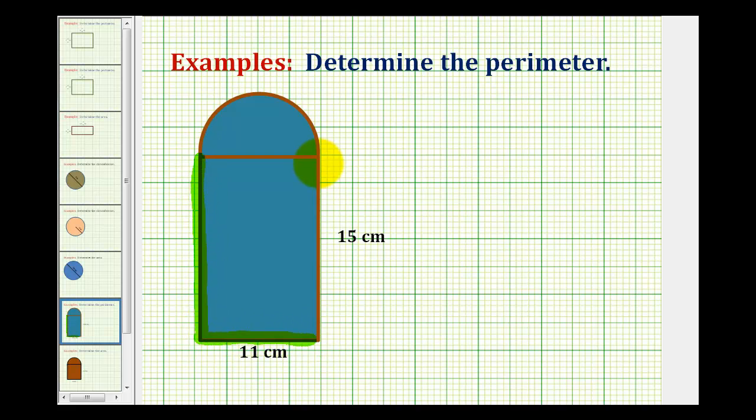Here, here, and here, and then we'd have the top part, which would be half of the circumference of the circle with a diameter of 11 centimeters.